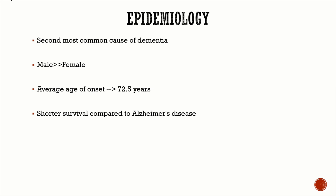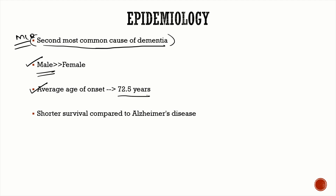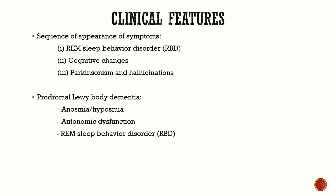Important MCQ: Lewy body dementia is the second most common cause of dementia. Males are involved more than females, the average age of onset is 72.5 years, and the prognosis is poor compared to Alzheimer's disease — patients have a shorter survival.